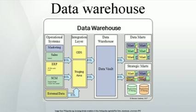History. The concept of data warehousing dates back to the late 1980s when IBM researchers Barry Devlin and Paul Murphy developed the business data warehouse. In essence, the data warehousing concept was intended to provide an architectural model for the flow of data from operational systems to decision support environments. The concept attempted to address the various problems associated with this flow, mainly the high costs associated with it. In the absence of a data warehousing architecture, an enormous amount of redundancy was required to support multiple decision support environments.